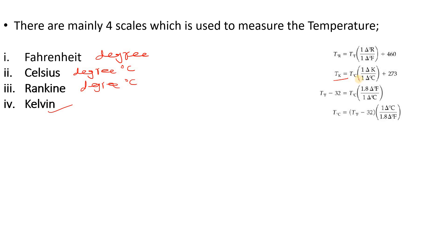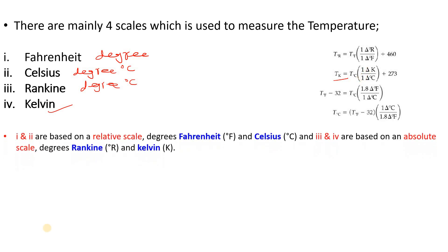Let me know in the comments box what is the reason behind it. Now Fahrenheit and Celsius are the relative scales, and Rankine and Kelvin are both based on the absolute scale. So Fahrenheit and Celsius are based on relative scale, and Rankine and Kelvin are based on the absolute scale.